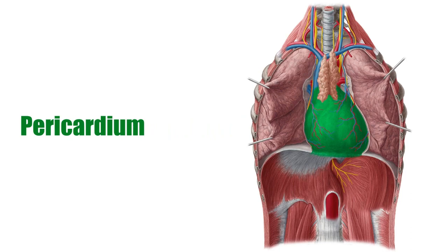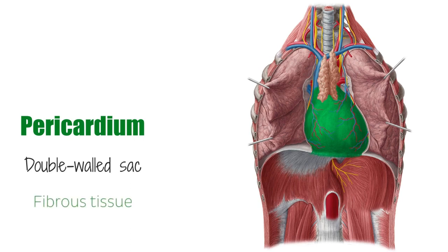The pericardium, seen here highlighted in green, is a double-walled sac that encloses the heart, the pericardial fluid, and the roots of the great vessels, and is situated within the middle mediastinum. The pericardium has one layer made of fibrous tissue and one made of serous tissue. Its function is to lubricate the moving surfaces of the heart. In this video, the anatomy of the pericardium will be discussed in detail.